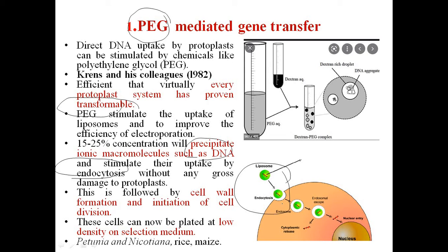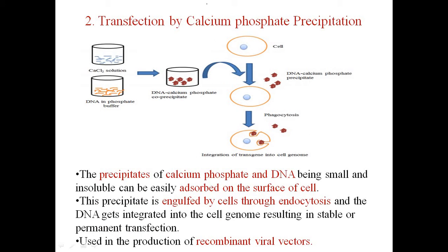The PEG stimulates the uptake of DNA through endocytosis. This figure gives the idea about how the complex is engulfed and enters into the cell through endocytosis. After entry of the vesicles or the complex of polyethylene glycol and DNA aggregate, it is followed by cell wall formation and initiation of cell division. We can observe by plating them on low-density selection medium. Plants like Petunia, Nicotiana, rice, and maize are obtained through this PEG-mediated gene transfer.